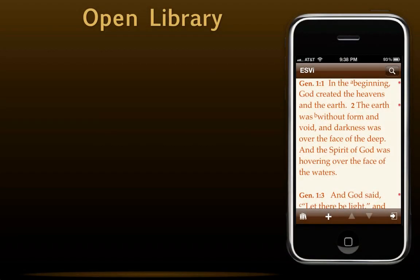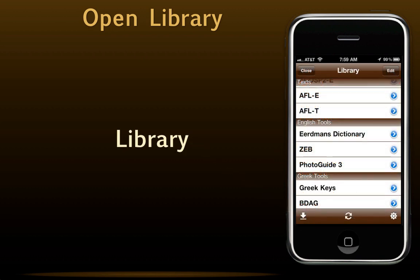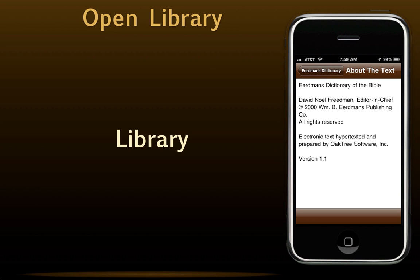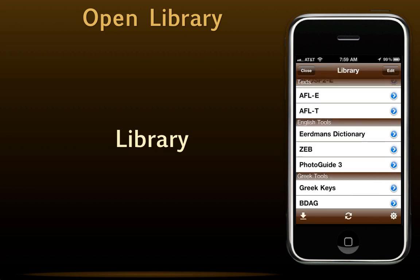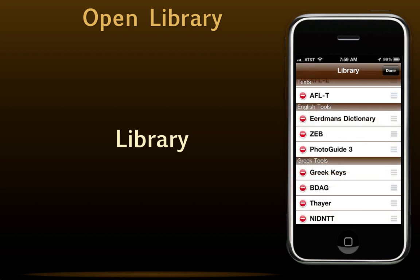The first step in either syncing or downloading is to open the library, where all of our modules are listed category by category. Tapping on the blue circle to the right of any module gives us information about that module. Once we return to the library, we can also edit it. Edit mode allows us to rearrange any module by selecting it and dragging it up or down, but only within a module's given category. We can also delete a module by tapping the red circle on the left, then Delete. Note that modules currently in use cannot be deleted. Once we're done editing, just tap Done.